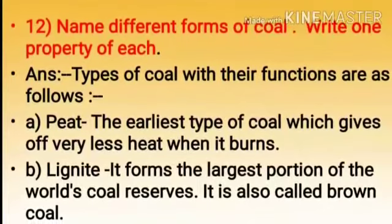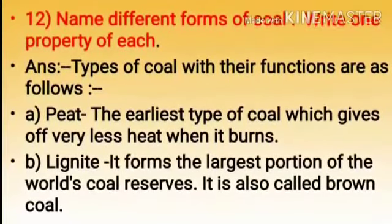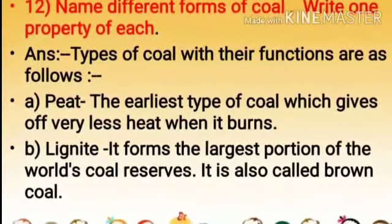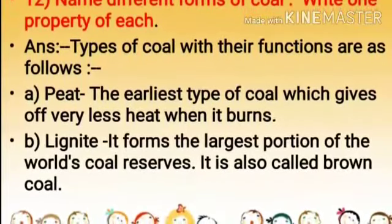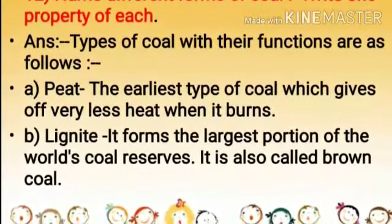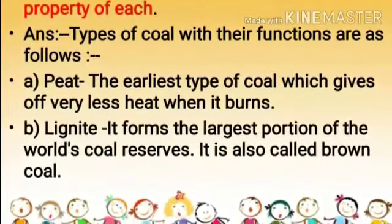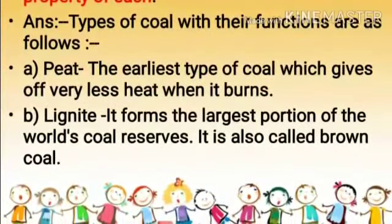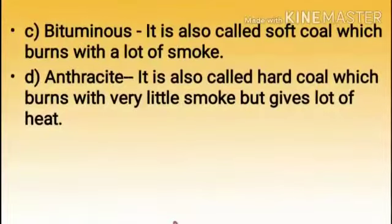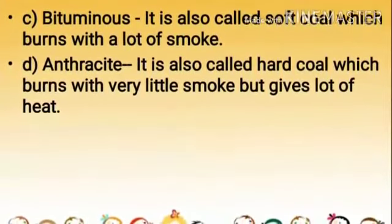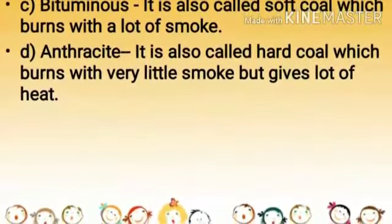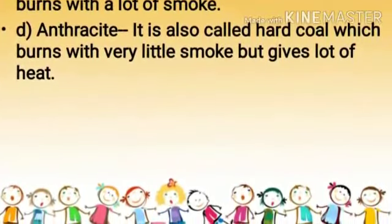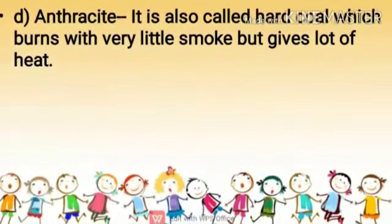Question 12: Name different forms of coal and write one property of each. Answer: A) Peat — the earliest type of coal, which gives off very little heat when it burns. B) Lignite — forms the largest portion of the world's coal reserves; also called brown coal. C) Bituminous — also called soft coal, which burns with a lot of smoke. D) Anthracite — also called hard coal, which burns with very little smoke but gives a lot of heat.